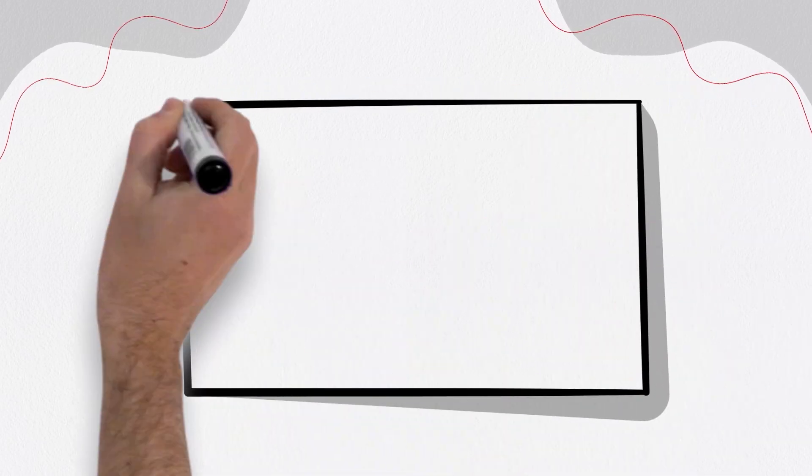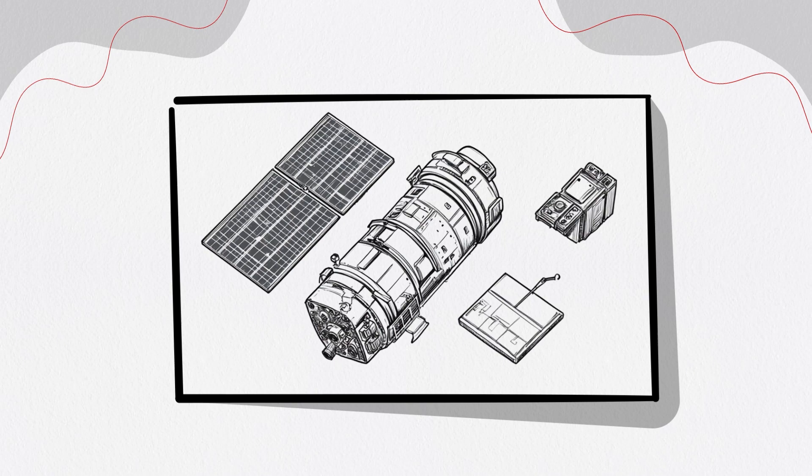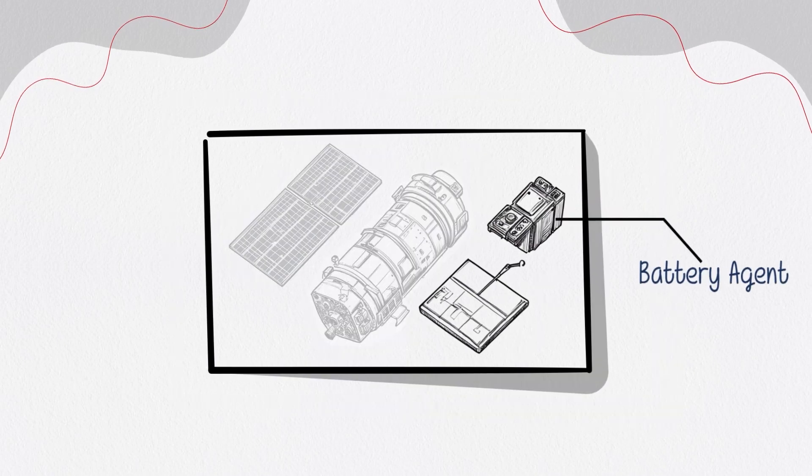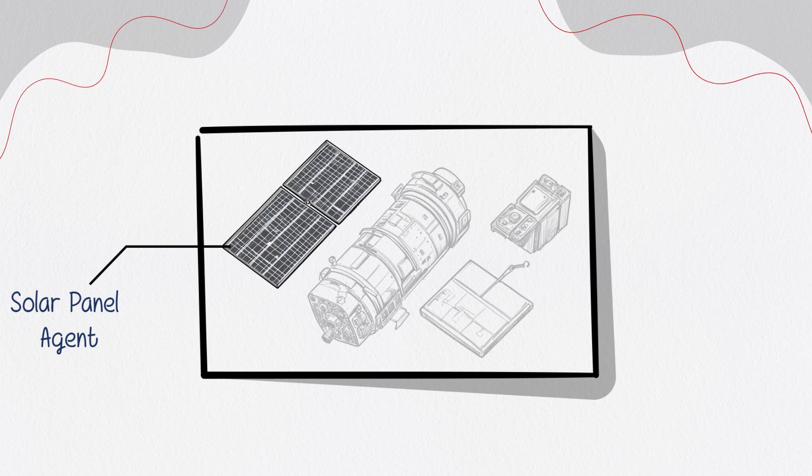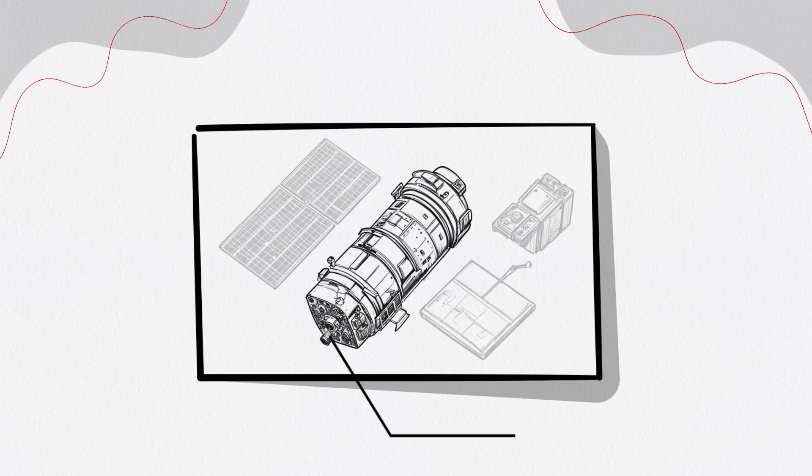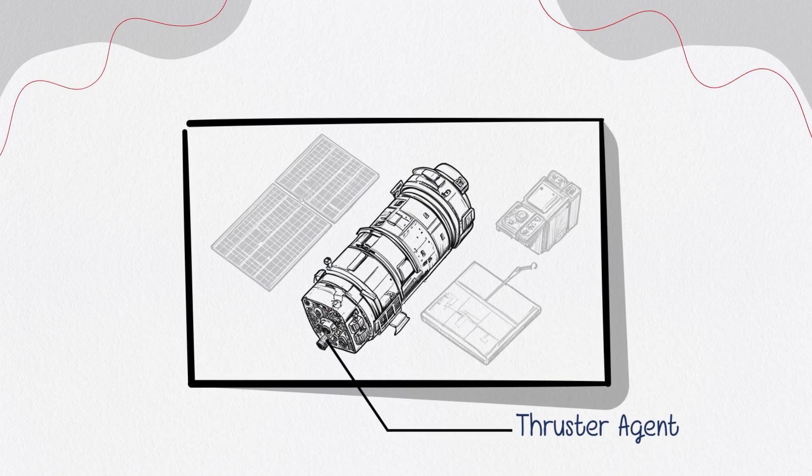With Acorn 2.0, you can configure an agent for each component on the spacecraft as an individual agent. The battery agent monitors charge and usage. The solar panel agent tracks sun exposure and alignment. The thruster agent considers power and fuel levels before responding to orientation requests.